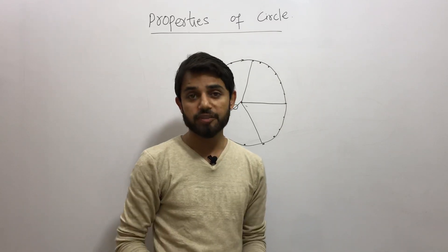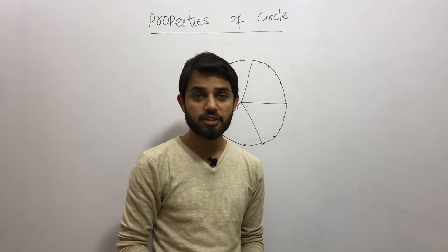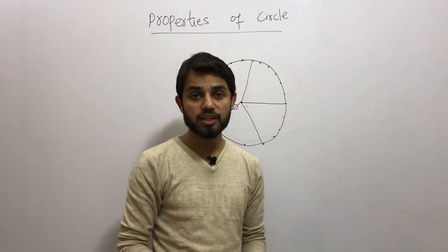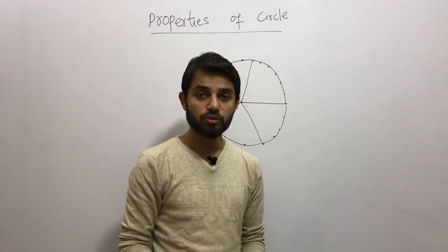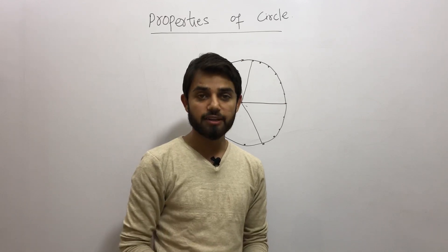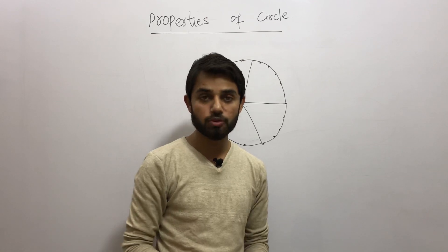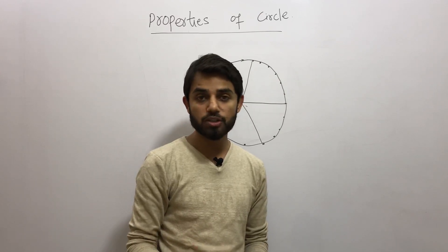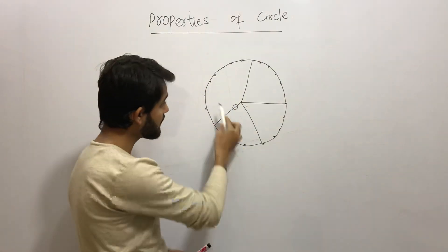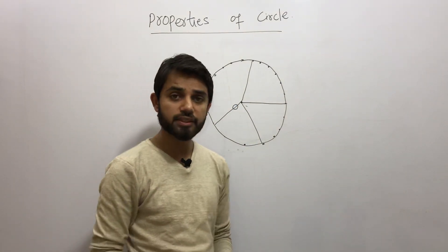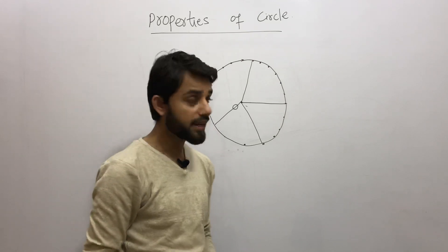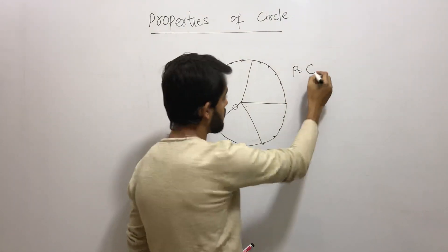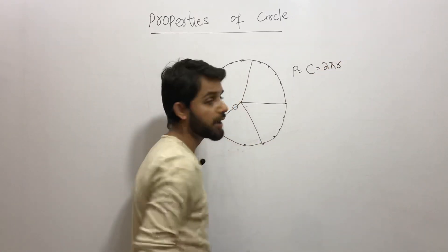For a square with side length x, the perimeter is 4x. For a triangle it is 3x, and for a rectangle it is 2 times (length plus breadth). But a circle doesn't have any sides, so the perimeter of a circle is defined as its circumference, and the circumference of a circle is 2πr.